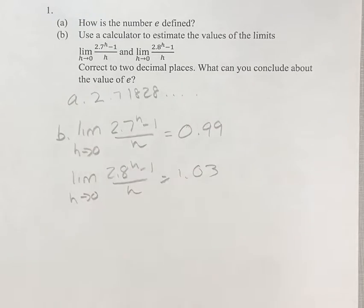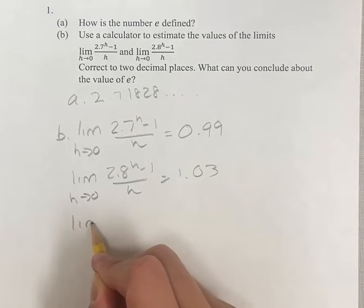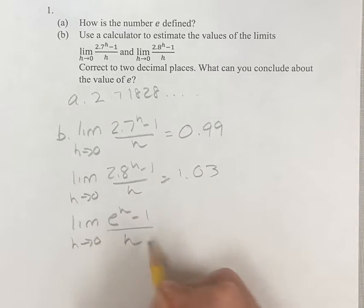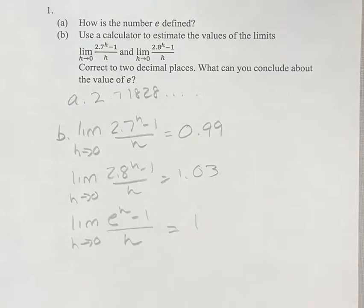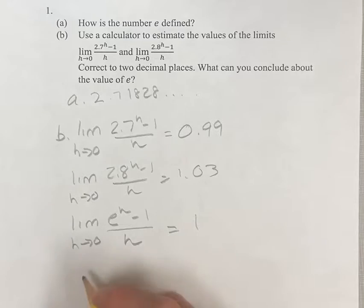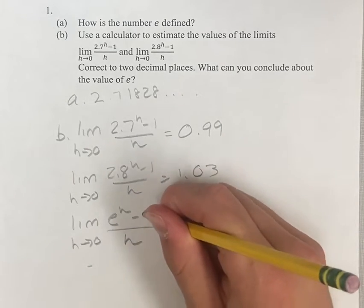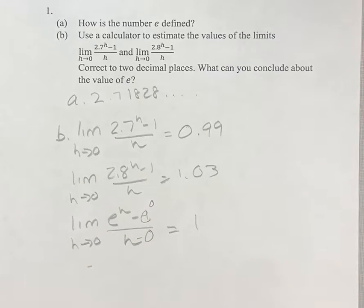What can you conclude about the value of e? Well, you could say the limit as h goes to 0 of e to the h minus 1 over h equals 1. This is basically saying, since this is the form of the derivative, you want to write e to the h minus e to the 0 over h minus 0, right.